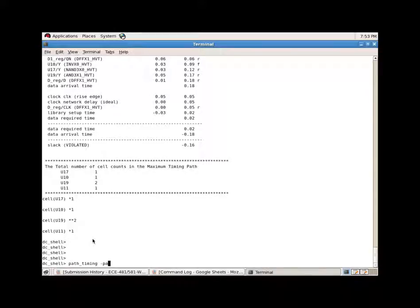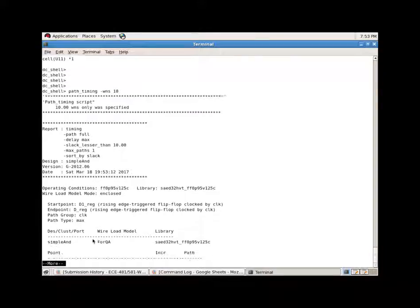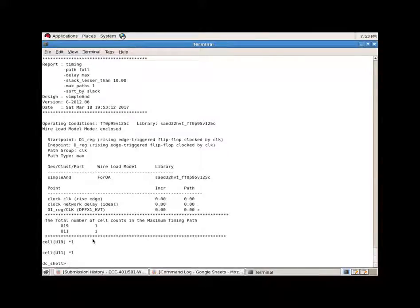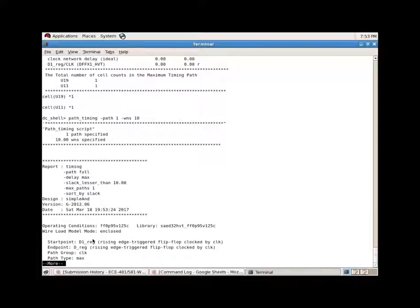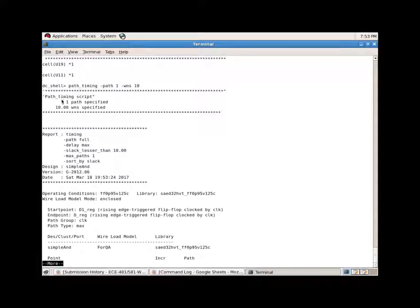Finally, you can also see the user putting worst negative slack less than 10, and that's what the report shows. If the user puts worst negative slack 10, let's say one path with negative slack of 10, and that's what the report says. It has one path specified with worst negative slack and the rest of the information as I already described before.